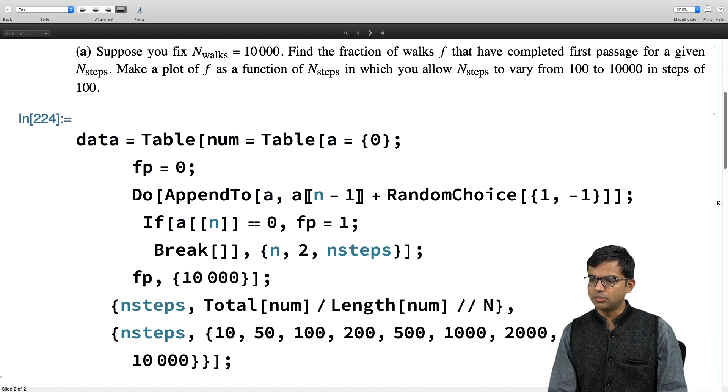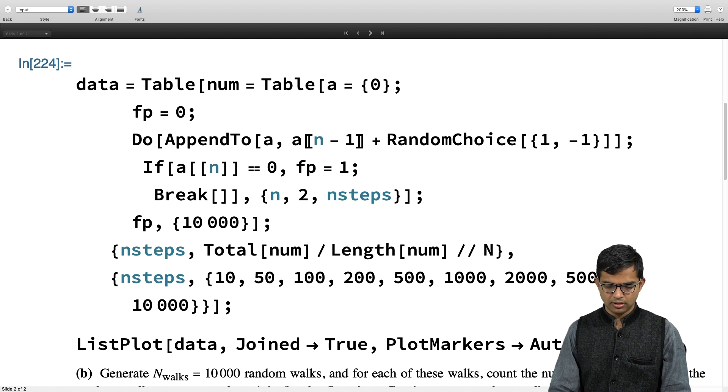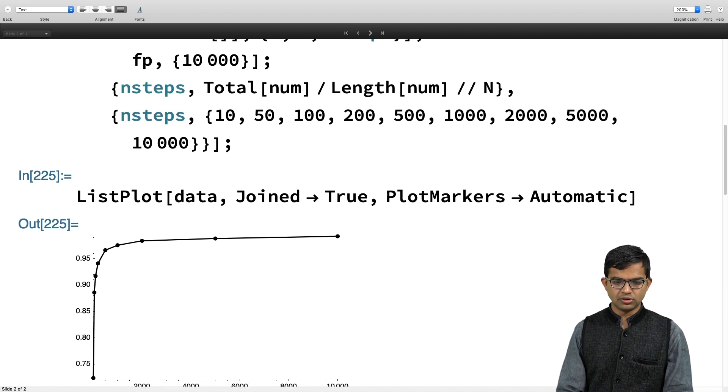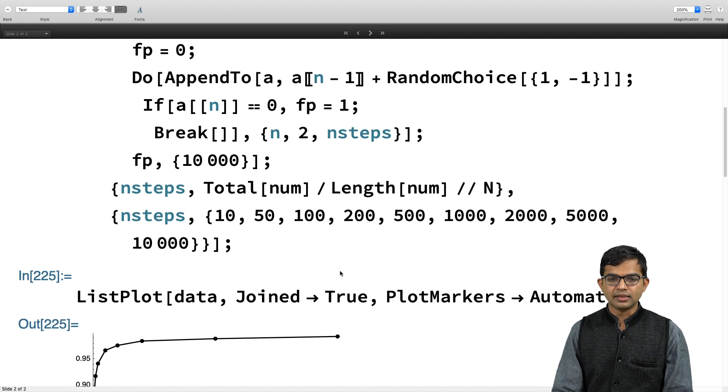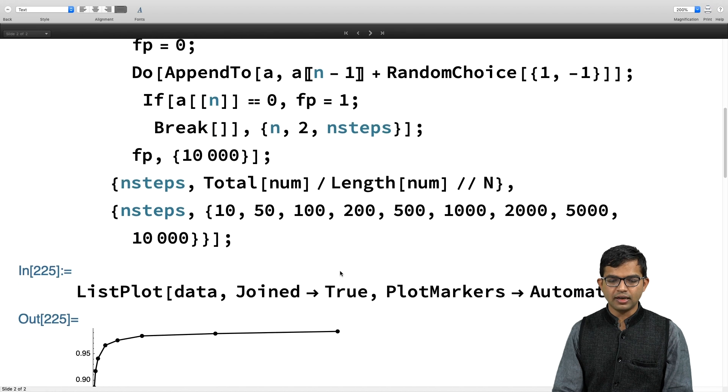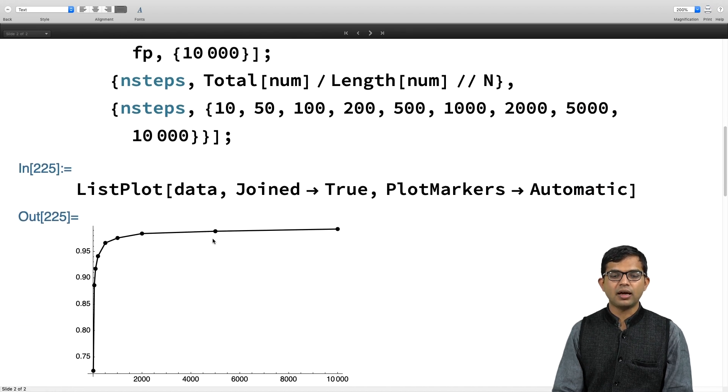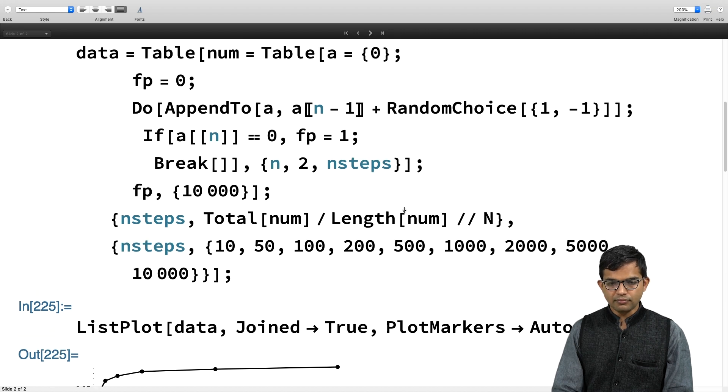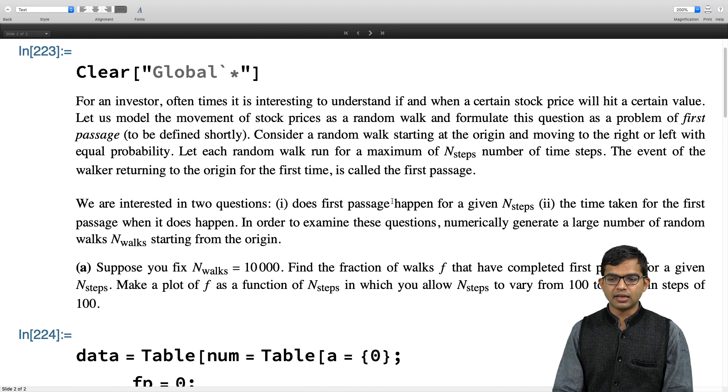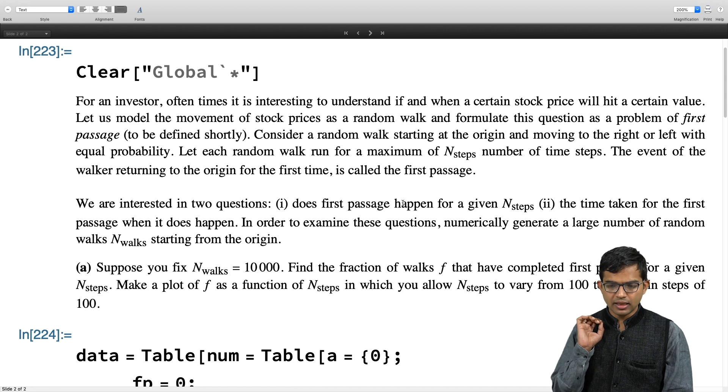It is still running. It will take a moment and then we can look at the data. The job is done. Now I am going to plot this. I use list plot and there you go. I have this fraction as a function of n steps. You see that this fraction is going to become as close to 1 as you want. You just have to keep on increasing n steps. In other words, if you are willing to wait for long enough, it seems like this probability that there is first passage is actually 1.